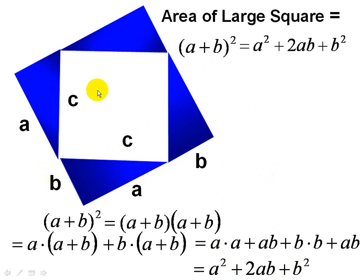We also note that the area of this large square consists of the area of the small square, which is just C squared, plus the area of the four right triangles.